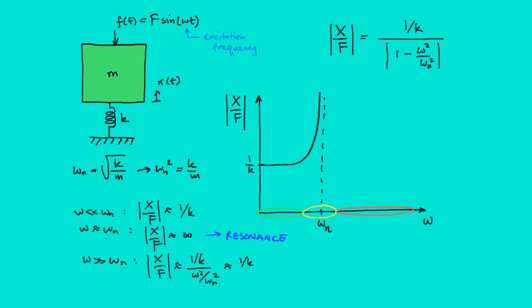We can cancel out k and we finally get 1 over ω²m.